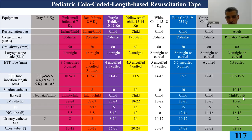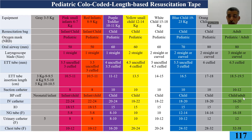Do you have a Broselow tape measure? You need to buy or print it — it's very important. It summarizes all equipment by color-coded weight range: resuscitation bag size, mask size, airway size, laryngoscope blade type, ETT size, ETT length, suction catheter, IV catheter, intraosseous needle, nasogastric tube, urinary catheter, and chest tube size — from newborn to older children.